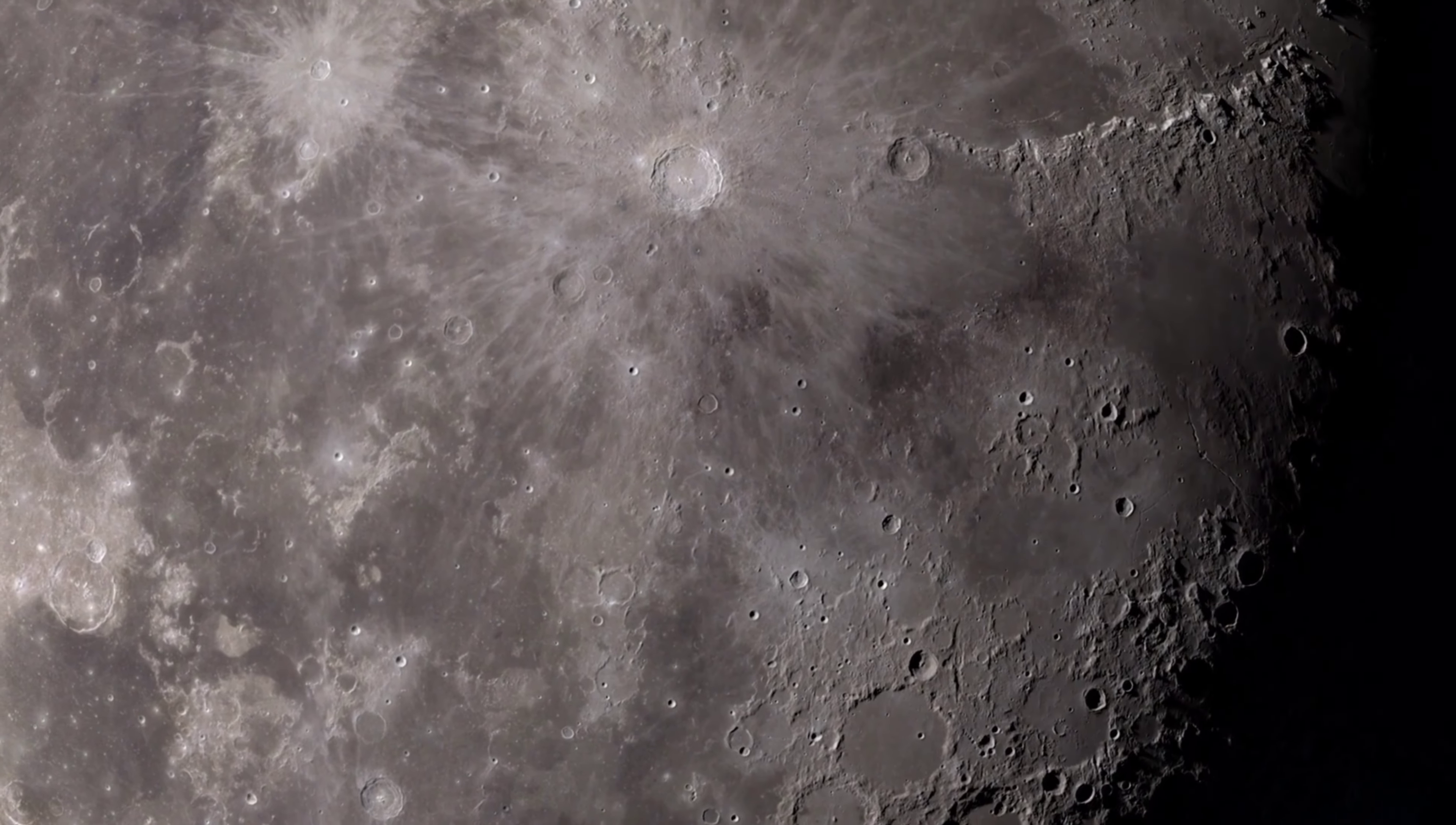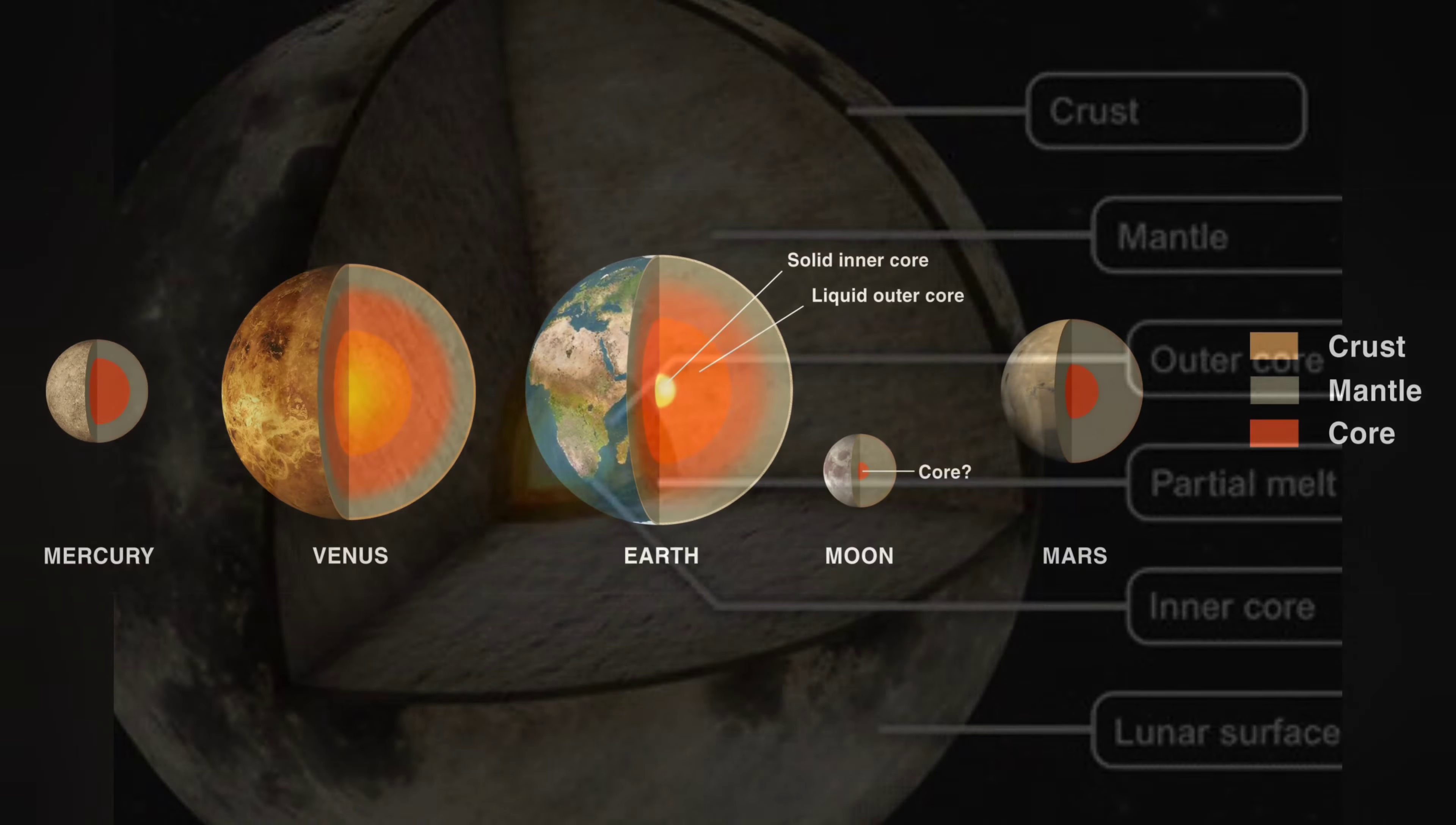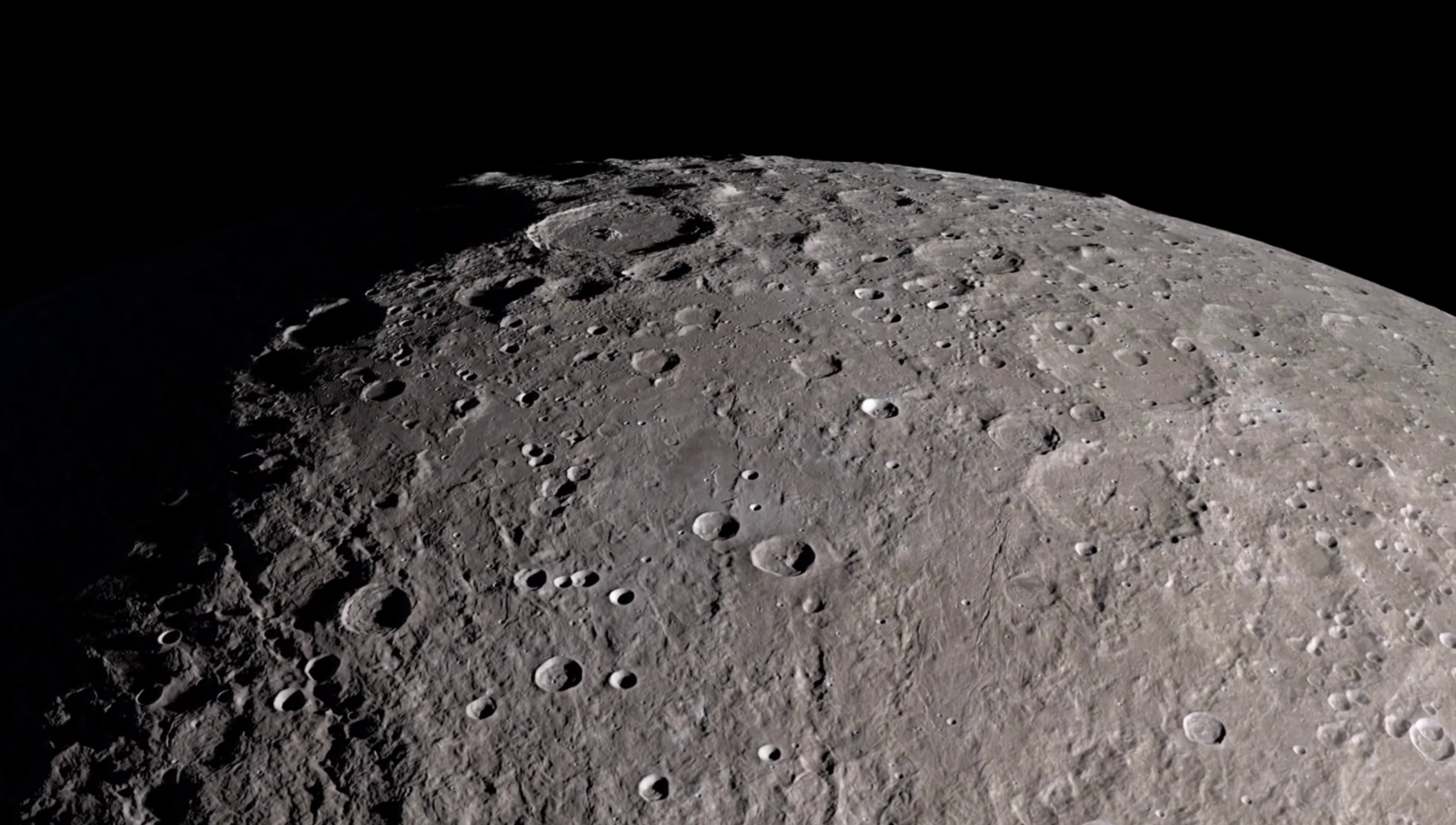Scientists have detected strange, unexpected variations in the moon's gravity field, which suggest that its internal structure is more complex than previously thought. Some scientists have proposed that the moon may have a partially molten core or even a small, solid inner core, which would be unusual for a moon of its size. Some say it could even be hollow. Despite these mysteries, the moon remains one of the most well-studied objects in the solar system, and ongoing research and exploration continue to reveal new insights into its formation, evolution, and internal structure.